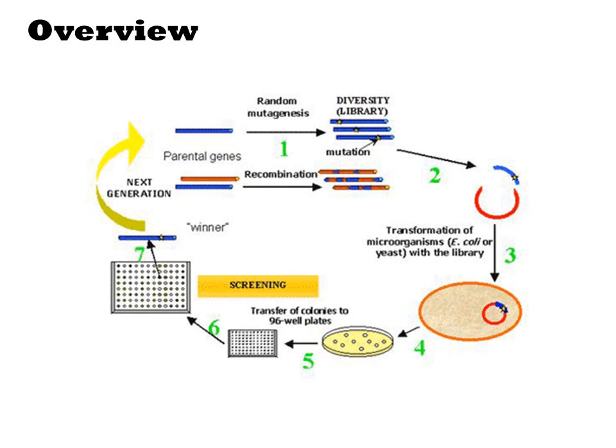You then pick individual colonies from the library, screen each one for activity, then cherry-pick the winners with improved activity. And those mutants go back into the cycle.